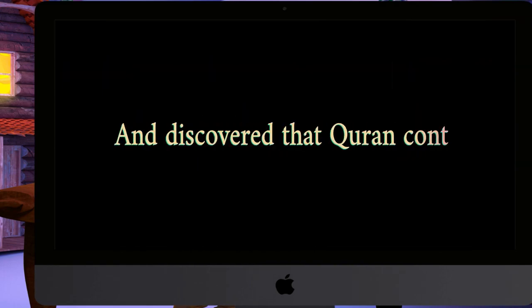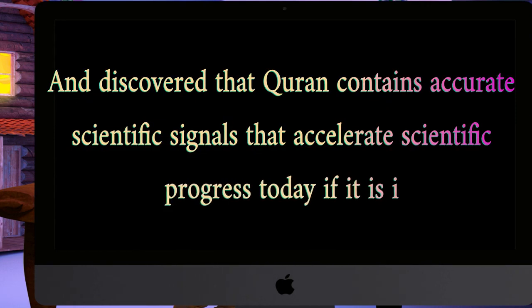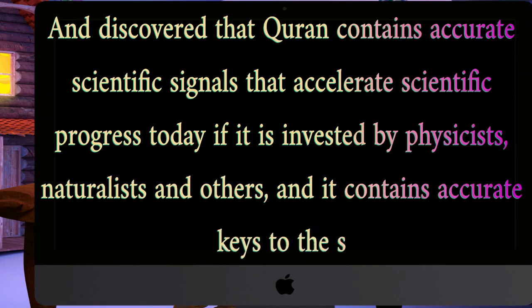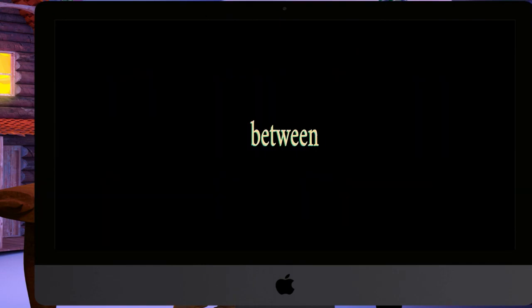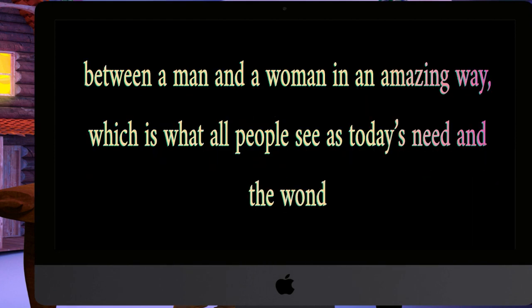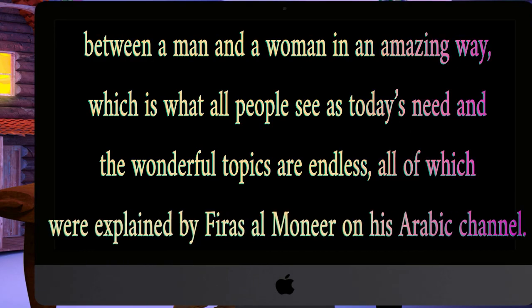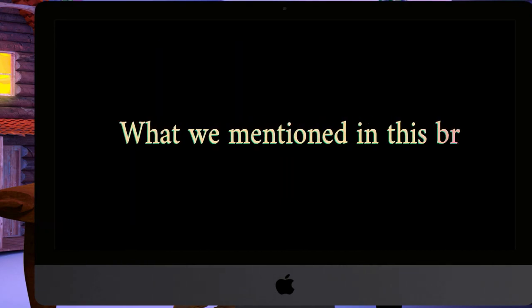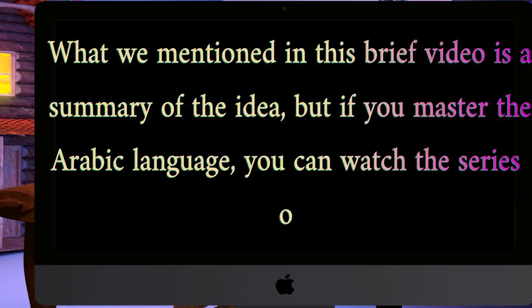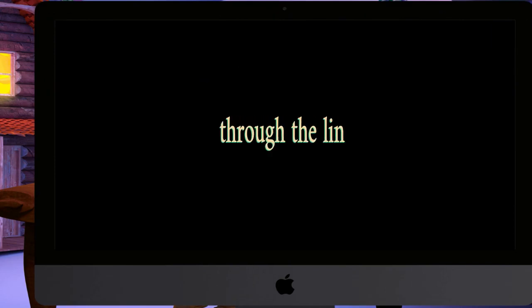He also discovered that the Quran contains accurate scientific signals that accelerate scientific progress today, if invested by physicists, naturalists, and others. It contains accurate keys to the success of the love relationship between a man and a woman in an amazing way — which is what all people see as today's need. These wonderful topics are endless, all of which were explained by Fayras al-Munir on his Arabic channel. What we mentioned in this brief video is a summary of the idea, but if you master the Arabic language, you can watch the series of videos proving this accuracy in the Quran through the link below the video.